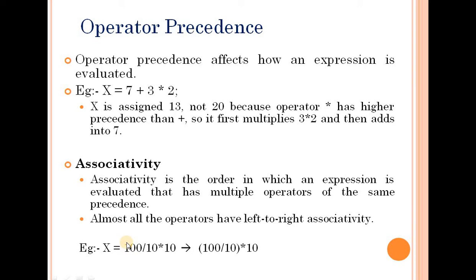We use left-to-right associativity. In the expression 100 divided by 10 into 10, we first evaluate 100 by 10, then multiply the result. When operators have the same priority, we consider left-to-right associativity.